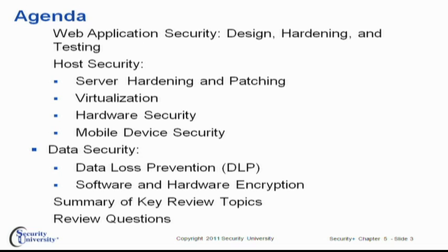We also want to look at the deployment of software and hardware encryption. We talked about different algorithms and encryption technologies in Chapter 3 — AES, RSA, and so on. We want to see how we actually apply these in different types of application scenarios, many of them in the mobile arena. Then we'll wrap up the chapter with a review of the high points and some practice questions.